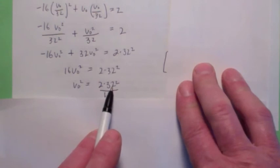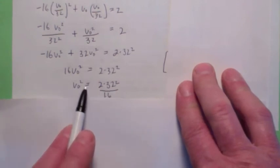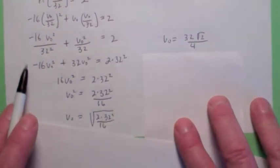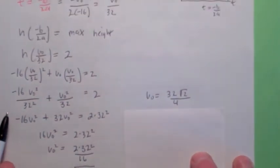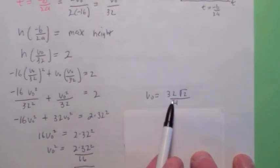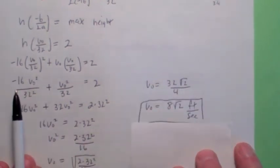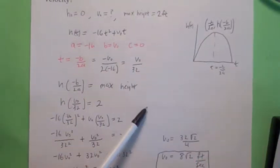What's the square root of 32 squared? Isn't it 32? And what's the square root of 16? Isn't it 4? So what you end up with is that v₀ equals 32 square root of 2 over 4, which is 8 square root of 2 feet per second. Very nice, huh?